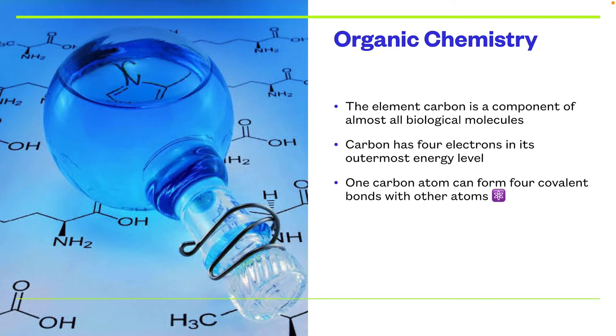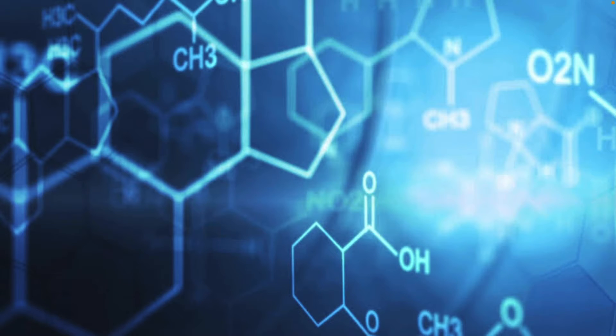Organic chemistry. The element carbon is a component of almost all biological molecules. Carbon has four electrons in its outermost energy level, and one carbon atom can form four covalent bonds with other atoms. As you can see, this is what organic chemistry looks like: has the O2, NH2, H3C and stuff like that. This is also what organic chemistry looks like: CH3, OH, O2N and so on.